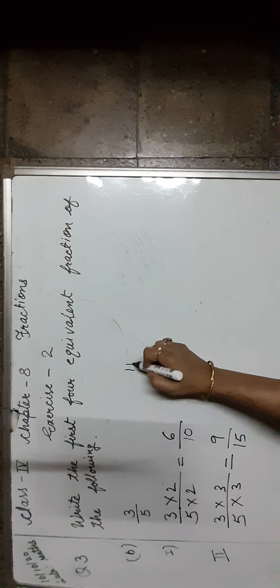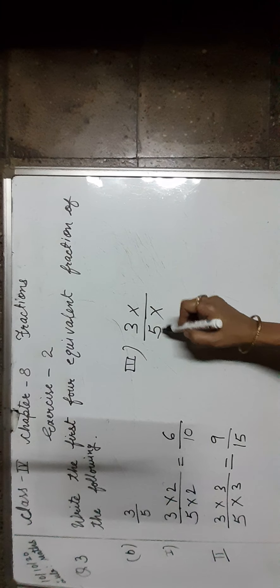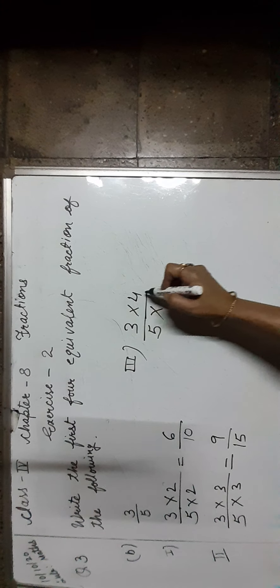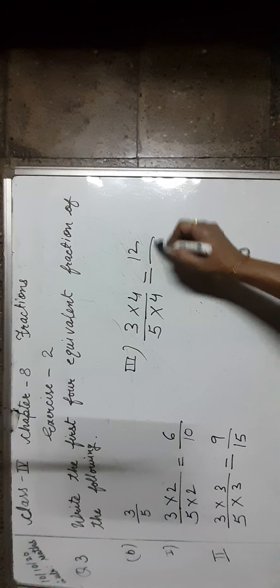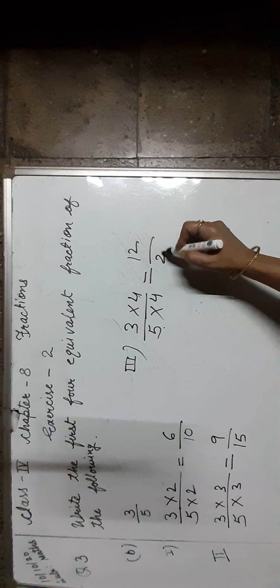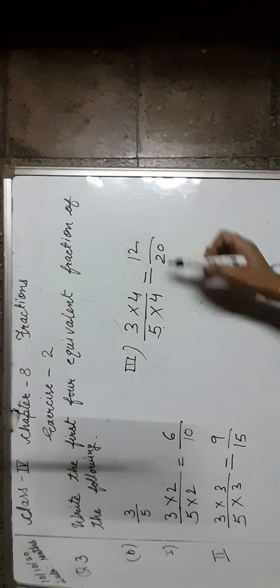Let us find the third equivalent fraction. To find out the third equivalent fraction, we multiply both numerator and denominator by 4. 3 into 4 is equal to 12, 5 into 4 is equal to 20. So the third equivalent fraction is 12 upon 20.